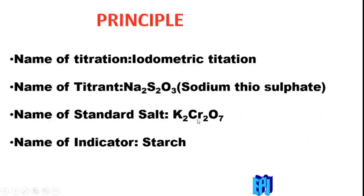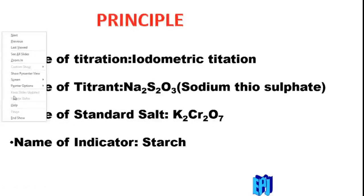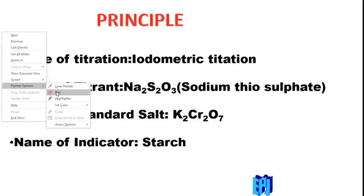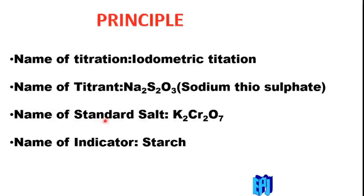The standard salt is K2Cr2O7. The name of the indicator is starch, and the name of the titrant is sodium thiosulphate. If the indicator is starch, then this titration is known as iodometric titration. In iodometric titration, we calculate the amount of a substance in terms of iodine produced. The presence of iodine can be determined by the starch indicator, because iodine forms a supramolecular complex with starch, producing a blue color solution.